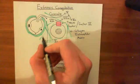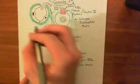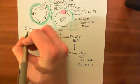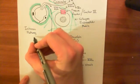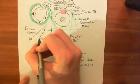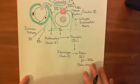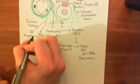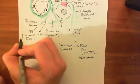Let's revise the intrinsic coagulation cascade. When factor 12 — also known as Hageman factor — comes out of the capillary through the hole, it is activated to factor 12a by the collagen of the extracellular matrix. So Hageman factor is activated to factor 12a.